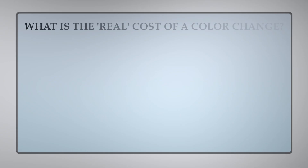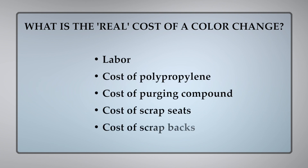Now, why do we focus on downtime? Because time is money. This lost downtime could be potentially hampering our ability to meet our customers' needs. Let's take a look at what the cost of performing a color change for a chair is. To do this, we'll need to consider labor with overhead, the cost of polypropylene, the cost of the purging compound, the cost of scrap seats, and the cost of scrap backs.